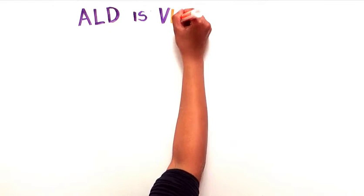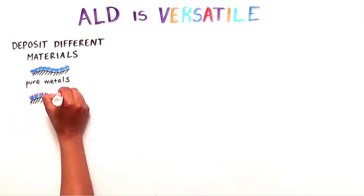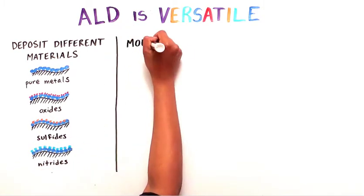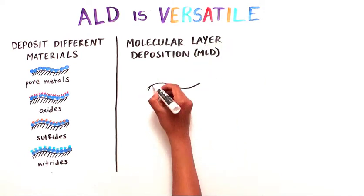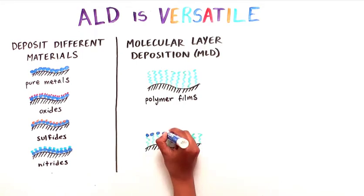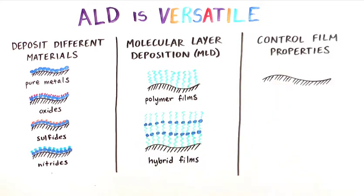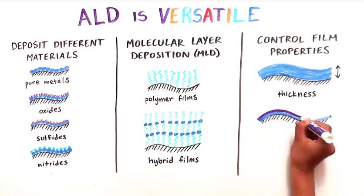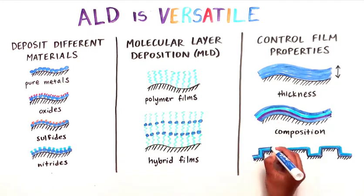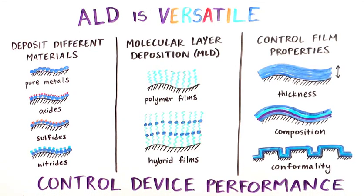ALD is a versatile technique that offers many advantages over other synthesis methods. ALD can be used to deposit many different materials, including pure metals, oxides, sulfides, and nitrides. A similar technique called molecular layer deposition, or MLD, uses organic molecules to deposit polymer films. The metal precursors can even be combined with organic molecules to create hybrid organic-inorganic films. ALD can be used to control film thickness and composition on many different textured surfaces, ranging from smooth to highly complex nanostructures. All of these characteristics enable precise control over the properties of the deposited material, allowing it to be tuned to the desired application.